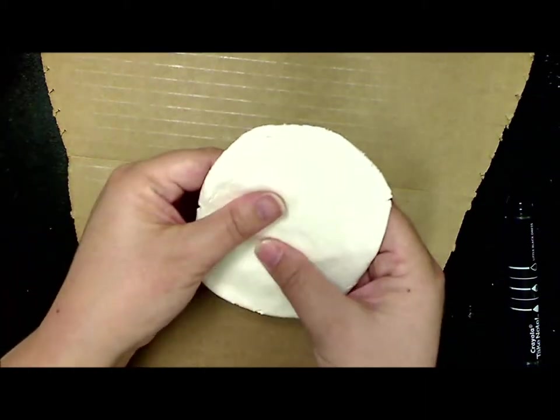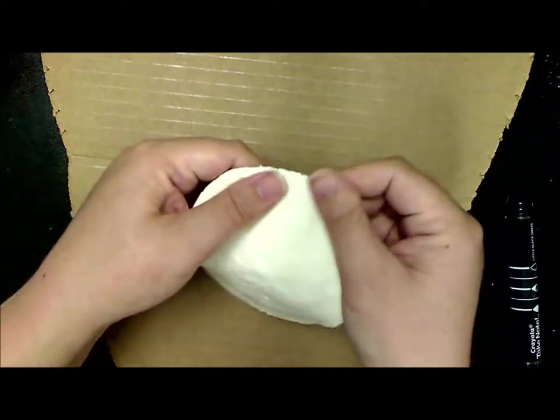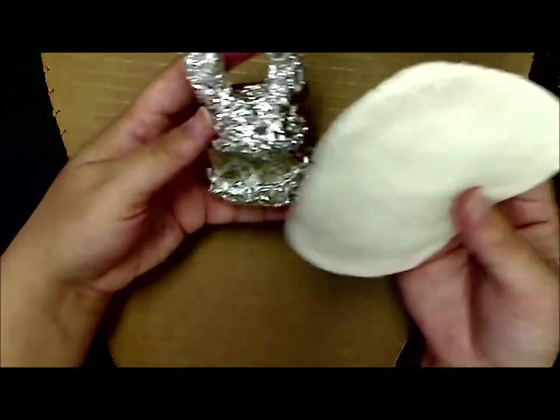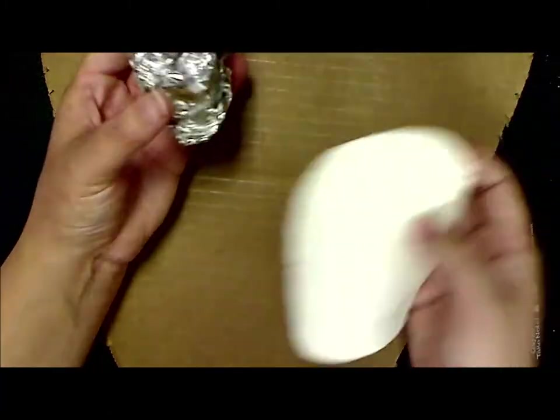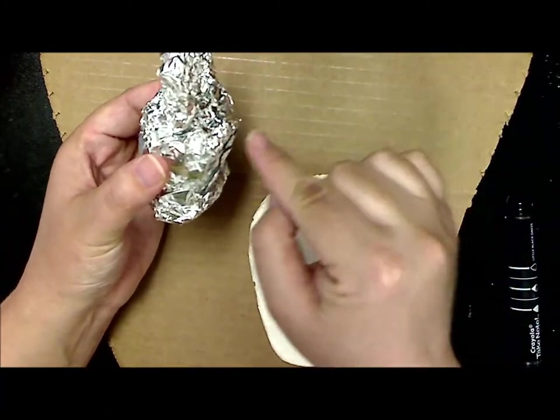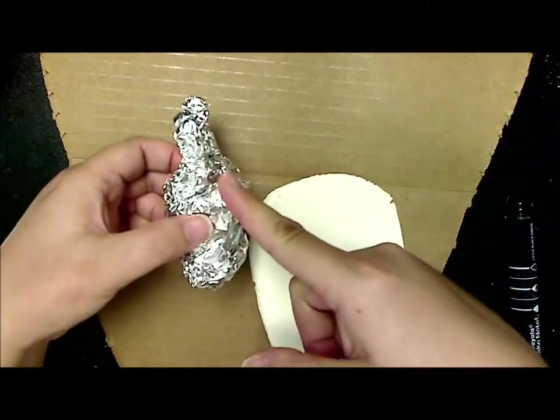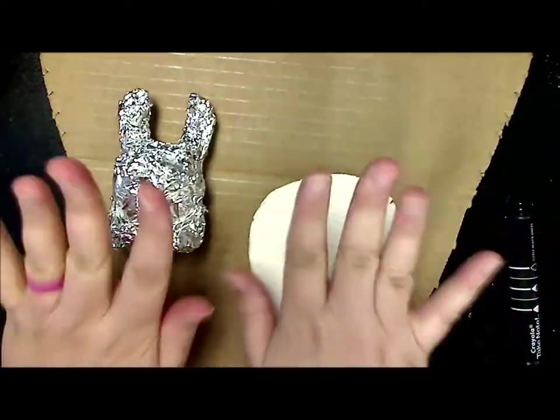I'll probably need another piece, which is okay. Ms. Ruckel will give you two pieces of Model Magic. So I'm going to lay it across the top. Oh, but wait. I'm missing his nose. So maybe I need another piece of foil.